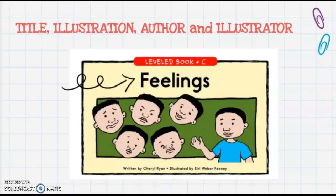So today we're going to go into something new. We're going to talk about the title of a text, illustrations in a text, and the author and illustrator. Here I have a picture of a text from Raz-Kids and my arrow is pointing to big letters across the front of the book. That is called the title. The title of this book is called Feelings. The title is usually in larger print across the front and gives you an idea of what the book is about. So this book is called Feelings and we can see by the pictures that it might be about the boy's different feelings.